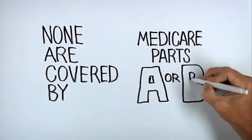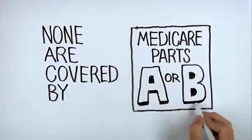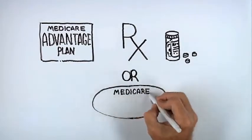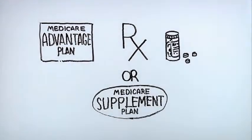None of these are covered by Medicare Parts A or B. To get benefits like these, you'll need a Medicare Advantage plan, a prescription drug plan, or a Medicare Supplement in addition to Original Medicare.